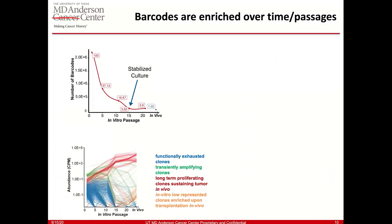What we see in terms of stabilization is that after about 15 to 20 passages, only 4% of the subclones remain. Upon transplantation, only about 1.5–1.6% of the subclones persist, and each of these subclones has very different dynamics. In red are the long-term self-proliferating clones, which sustain over passages in vitro and also in the transplantation step. Clones in blue are functionally exhausted and die off in just a few passages. In green are transiently amplified clones — they grow for certain passages and then finally exhaust. Orange is another interesting population: initially low-represented in vitro, but they have some advantage in vivo and are enriched in subsequent passages both in vitro and in vivo.